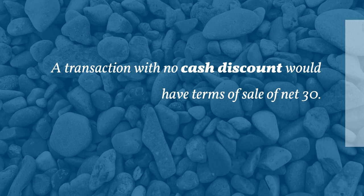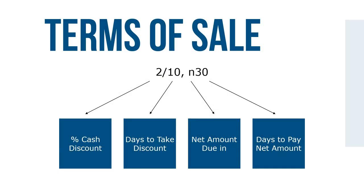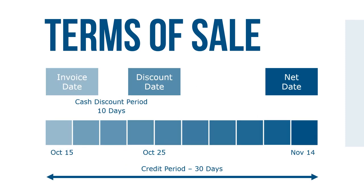A transaction with no cash discount would have terms of sale of net 30, meaning the net amount of the invoice is due in 30 days. If a cash discount is offered, the terms of sale would be written as 2/10/30, meaning a 2% cash discount may be taken if the invoice is paid within 10 days; if not, the net amount is due in 30 days. For example, on an invoice dated October 15th with terms 2/10/30, the cash discount period runs 10 days from October 15th through October 25th, and the credit period of 30 days extends from October 15th through November 14th.